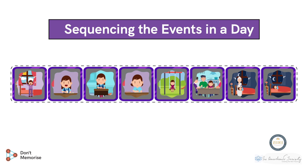Conclude by repeating the sequence while pointing to each picture card: getting up early in the morning when the sun rises, eating breakfast, going to school to study, studying and doing homework at home, going to play in the park in the evening, eating food with the whole family at night, listening to bedtime stories from grandparents, and sleeping at night.